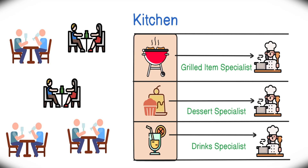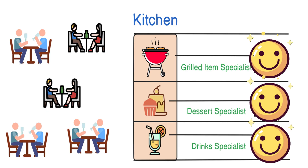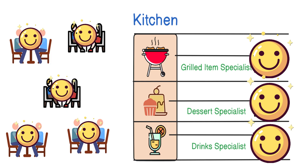To solve this problem, the kitchen can be divided into multiple sections: one for grilling, one for desserts, and one for drinks. Each section will have different chefs to handle the related orders. This strategy ensures that no single chef is overloaded and orders are served quickly. Isn't this exactly what we want from our software applications too? No server should be overloaded, and we should be able to serve clients as quickly as possible.